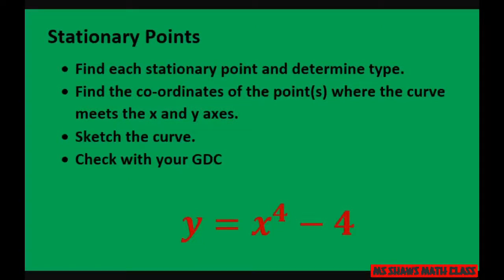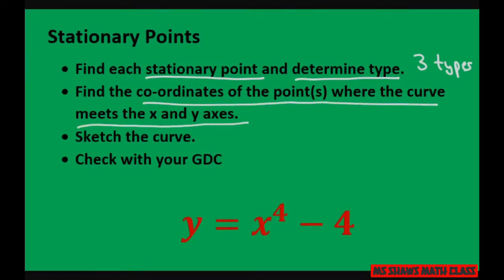Hi everyone, this video is regarding stationary points. We're going to find each stationary point and determine the type. There are three types. And then we're going to find the coordinates of where the curve meets the x and y axis, so the x and y intercepts, and sketch the curve. You may also check with your graphing display calculator. And here's the equation of the curve.